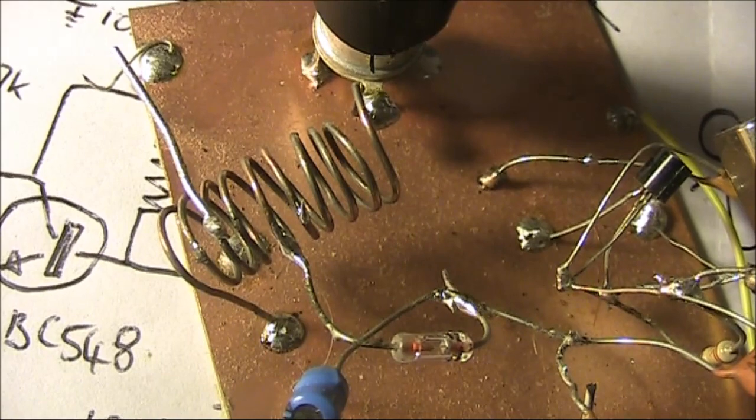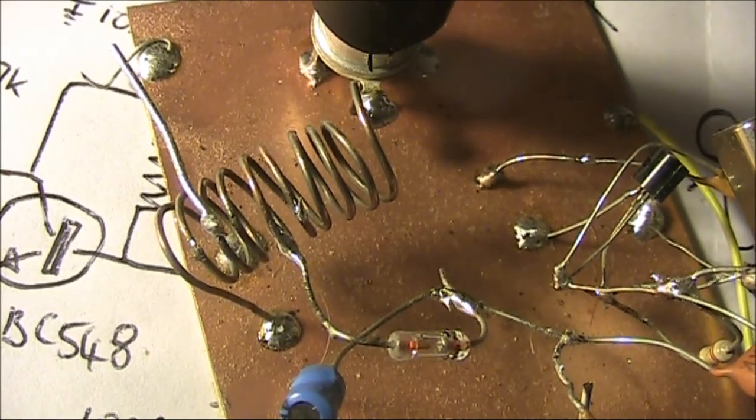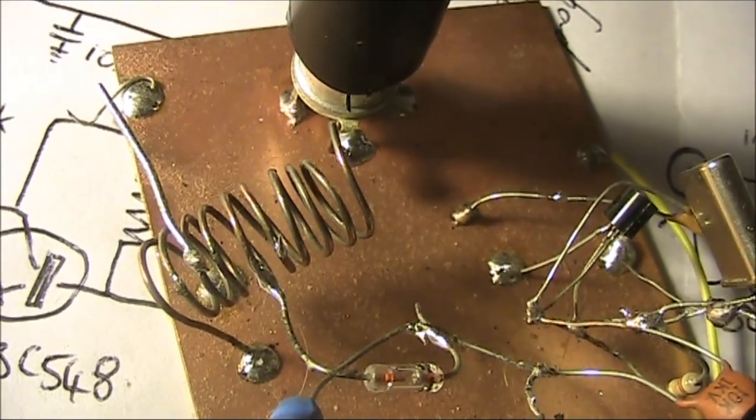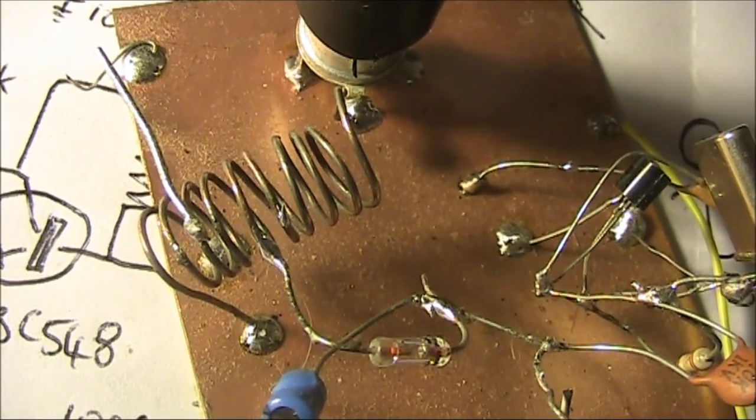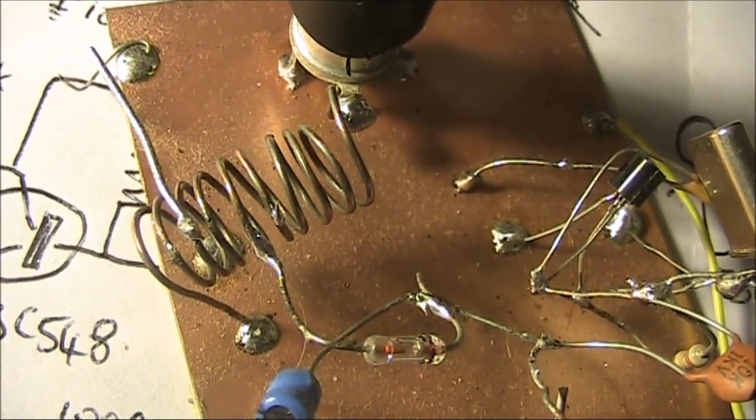Here you can see the coil. One end goes to ground, the other to the Beehive trimmer. And the tapping points, one for the diode, one for the antenna.